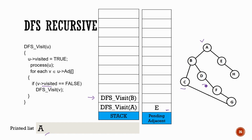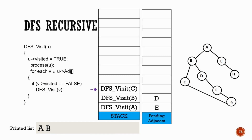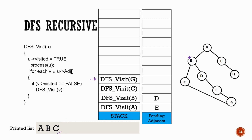So DFS will be called for either C or D. DFS for C is called and D is pending — D will be called later. B is printed, then C is printed, and DFS for G is called since B is already visited and C has called DFS G.